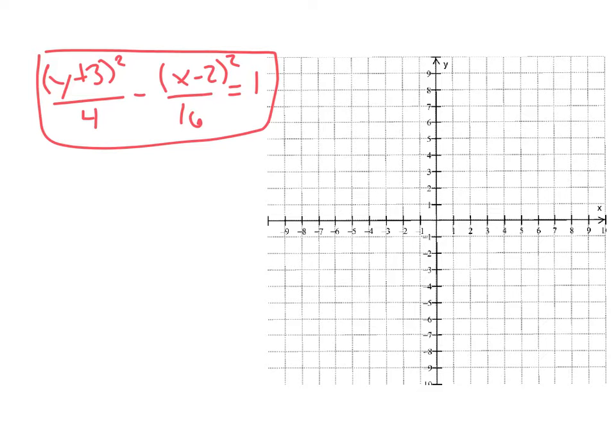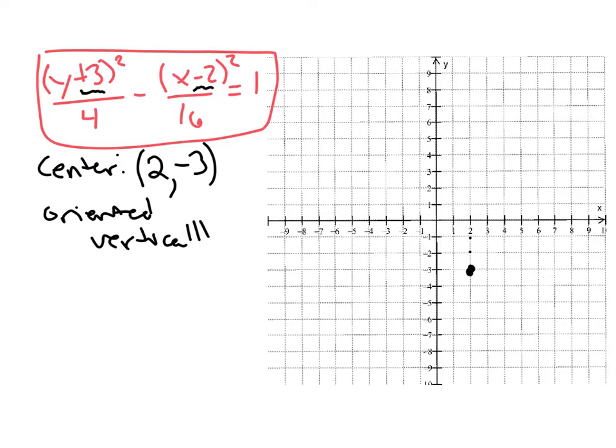Okay so to graph this thing, the coordinates for the center will be, the x-coordinate comes from here, remember it's always opposite sign. So the x-coordinate is positive 2. The y-coordinate, it's always opposite sign. So the y-coordinate is negative 3. So this thing is centered at (2, -3) and it's oriented vertically because the y expression is positive.